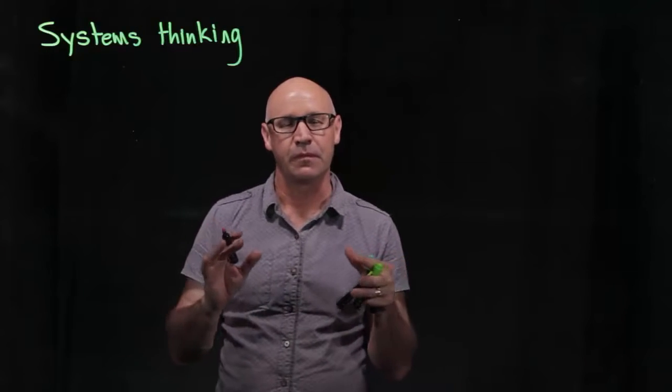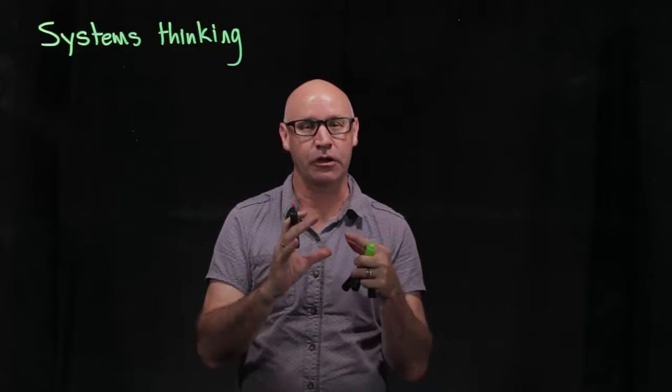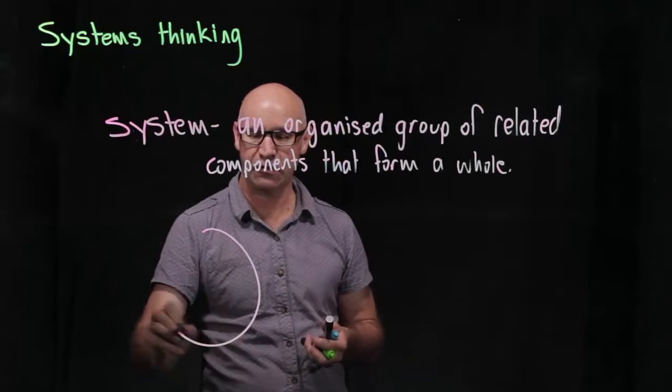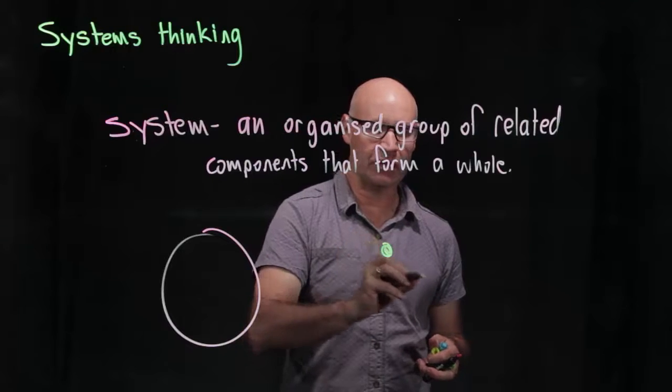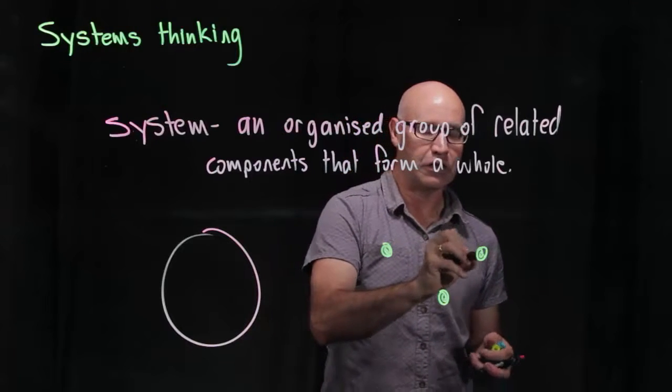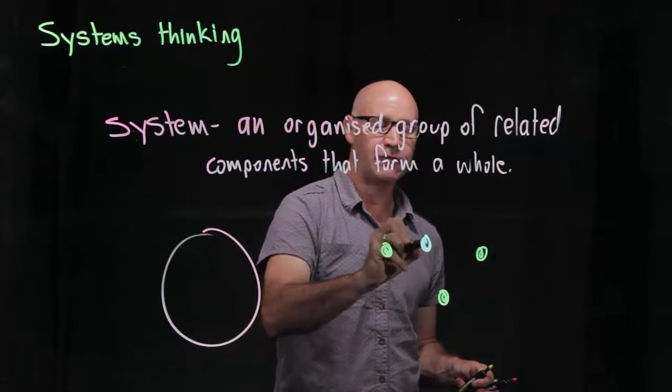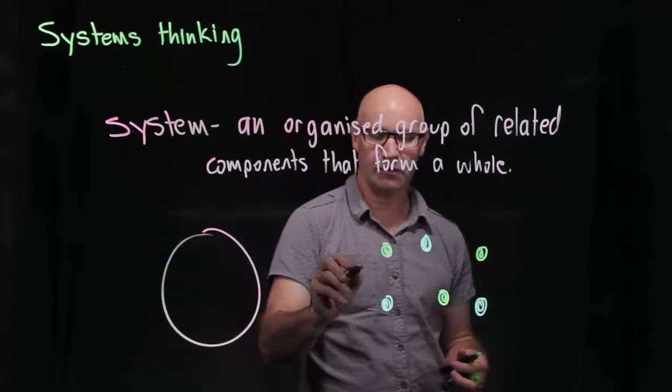A system is an organized group of related components that form a whole. So the whole system here is made up of a whole series of different components that are interrelated, and they all have to work together to form the whole system.